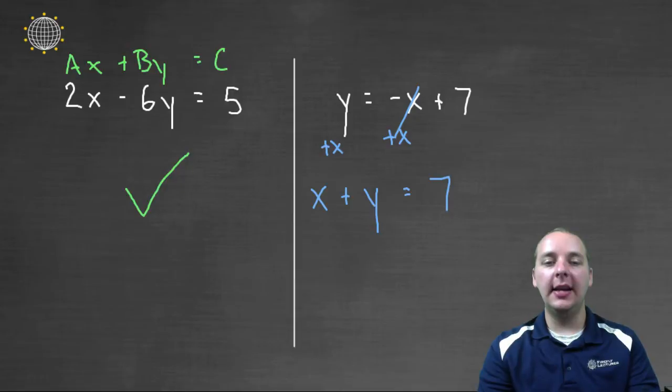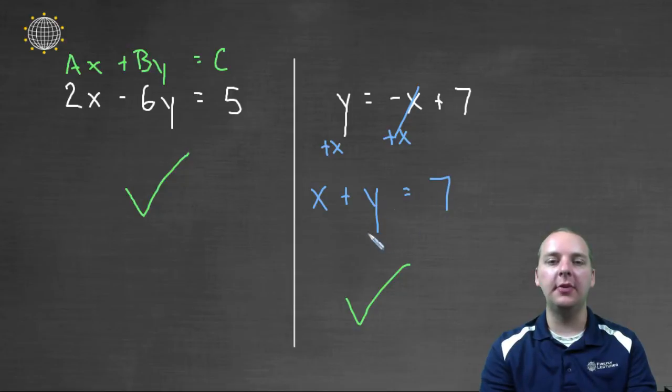And then now it is in standard form again, because you have one X plus one Y equals seven. So you can put equations in standard form if they're not already in standard form. But the original one was not, and our new one is in standard form.